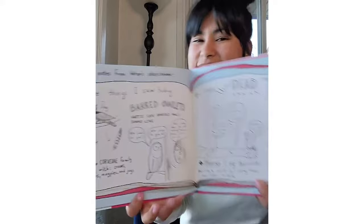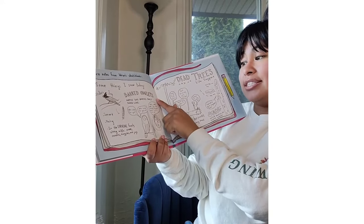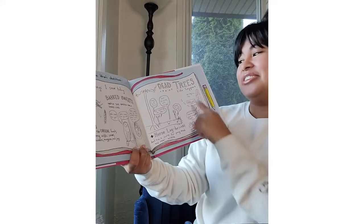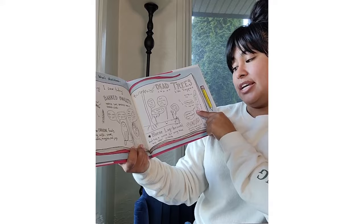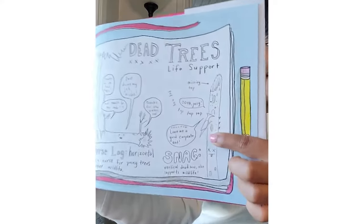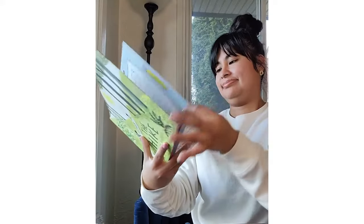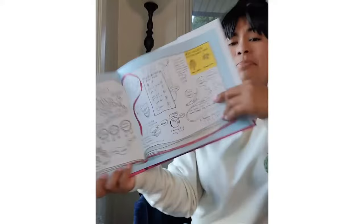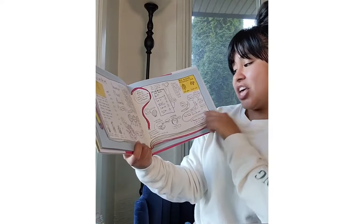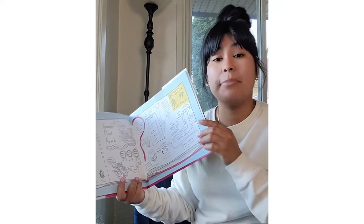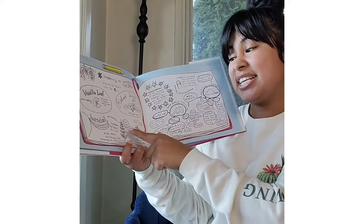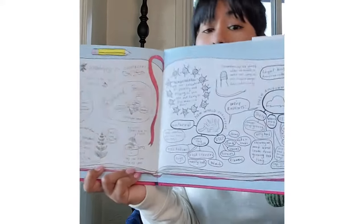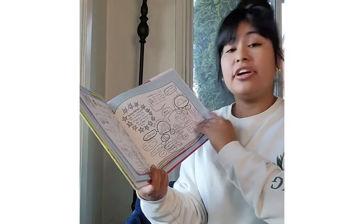Here are some notes from Wren's sketchbook. She saw some barred owlets — she said they sound like 'who cooks for you? Who cooks for you all?' This woodpecker is eating a juicy carpenter ant. And that is actually a banana slug — the second largest slug in the world. That must be pretty big. A horsetail is like a living fossil. And some thimbleberries are very delicate for packing, so you probably won't see them at grocery stores because they're too delicate.